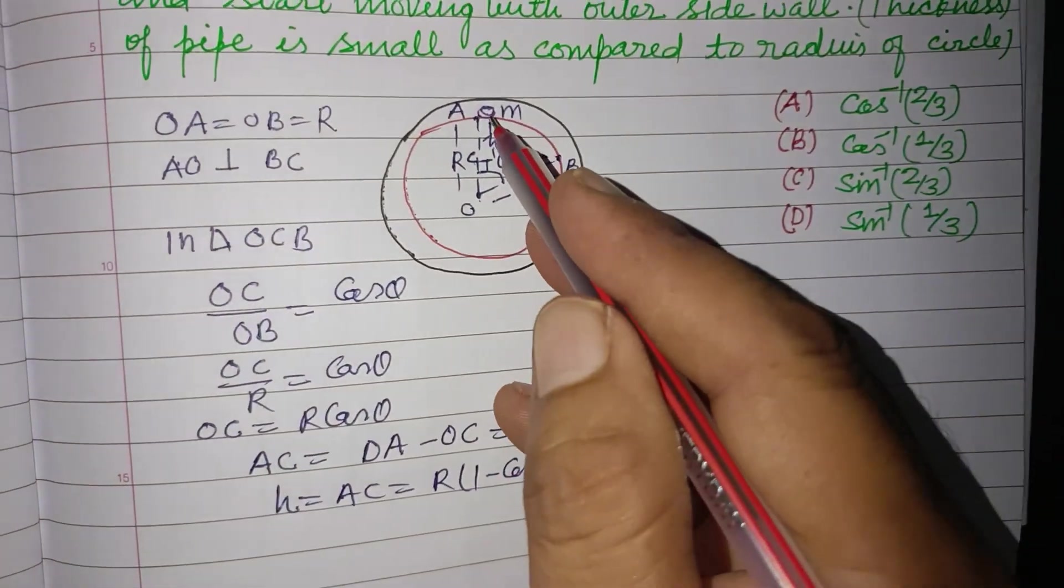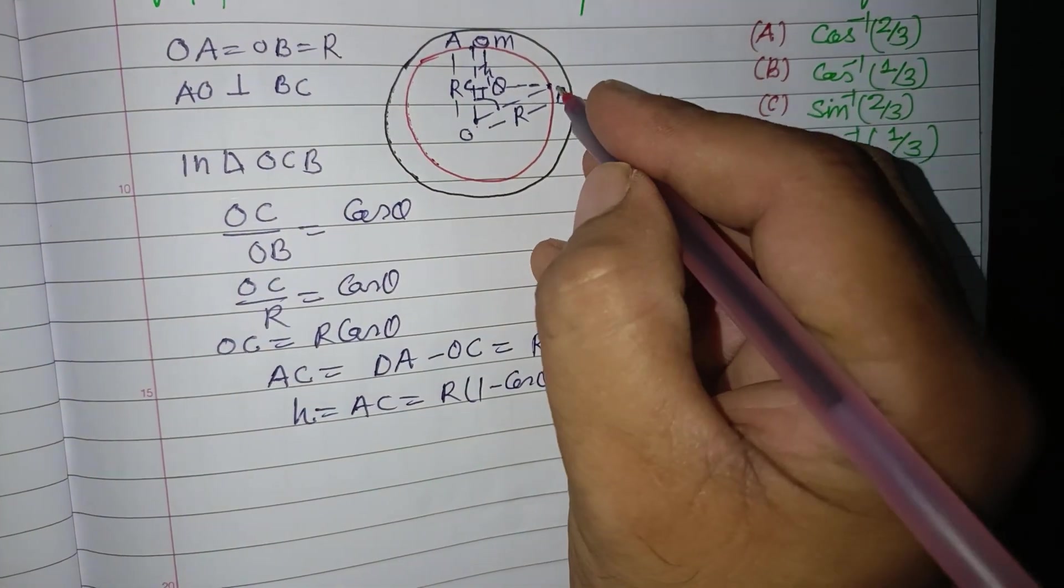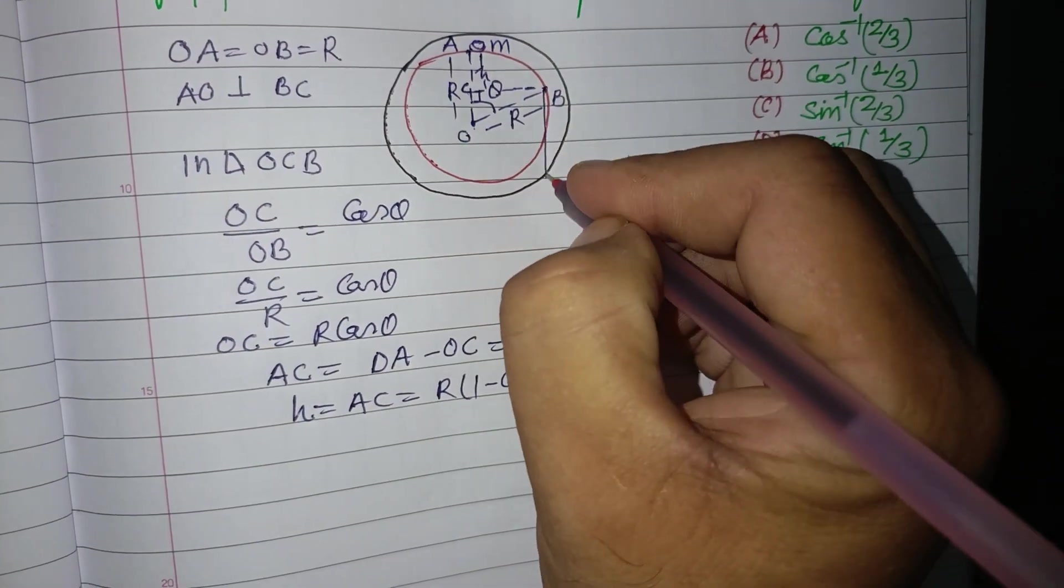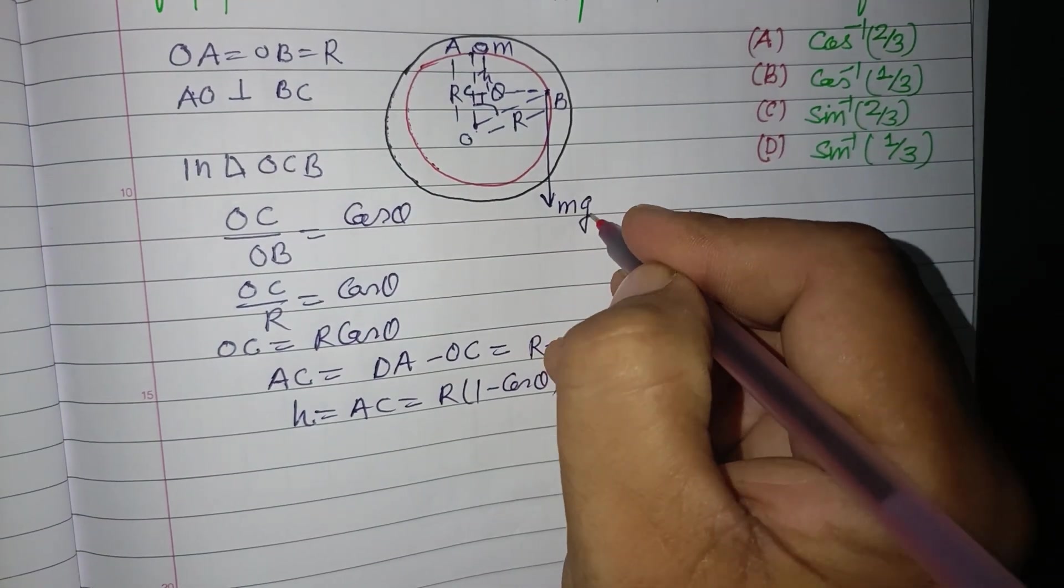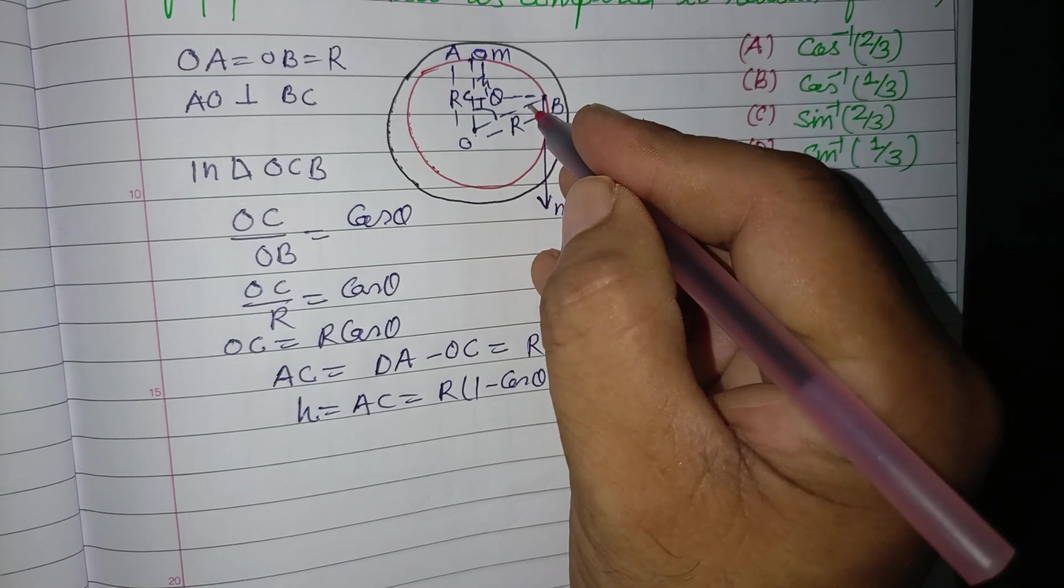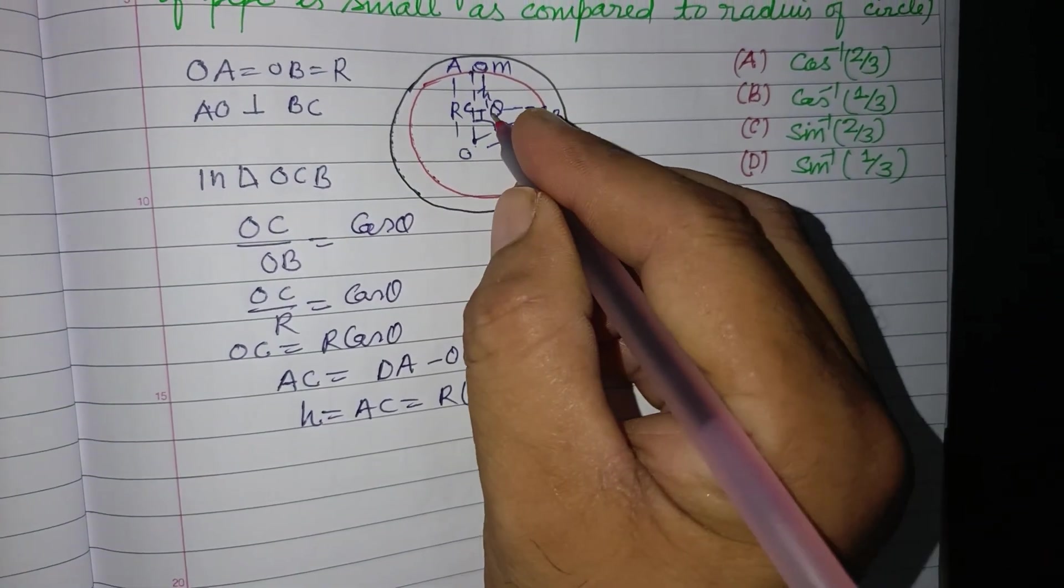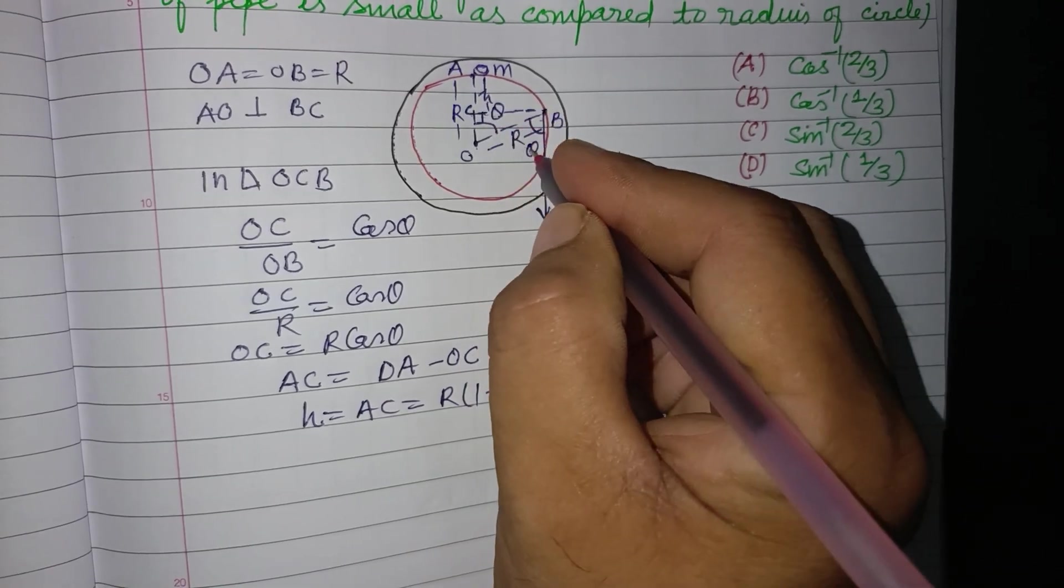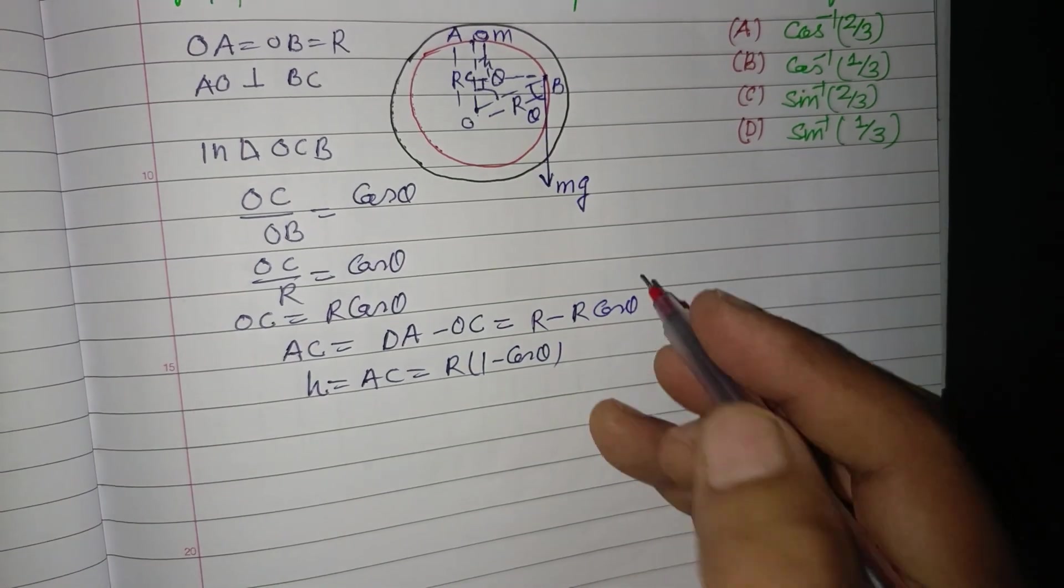This is the height which is lost by the ball from A to B. Now at B, the mass is m, so mg works in downward direction. And this angle will be theta because these are alternative interior angles.